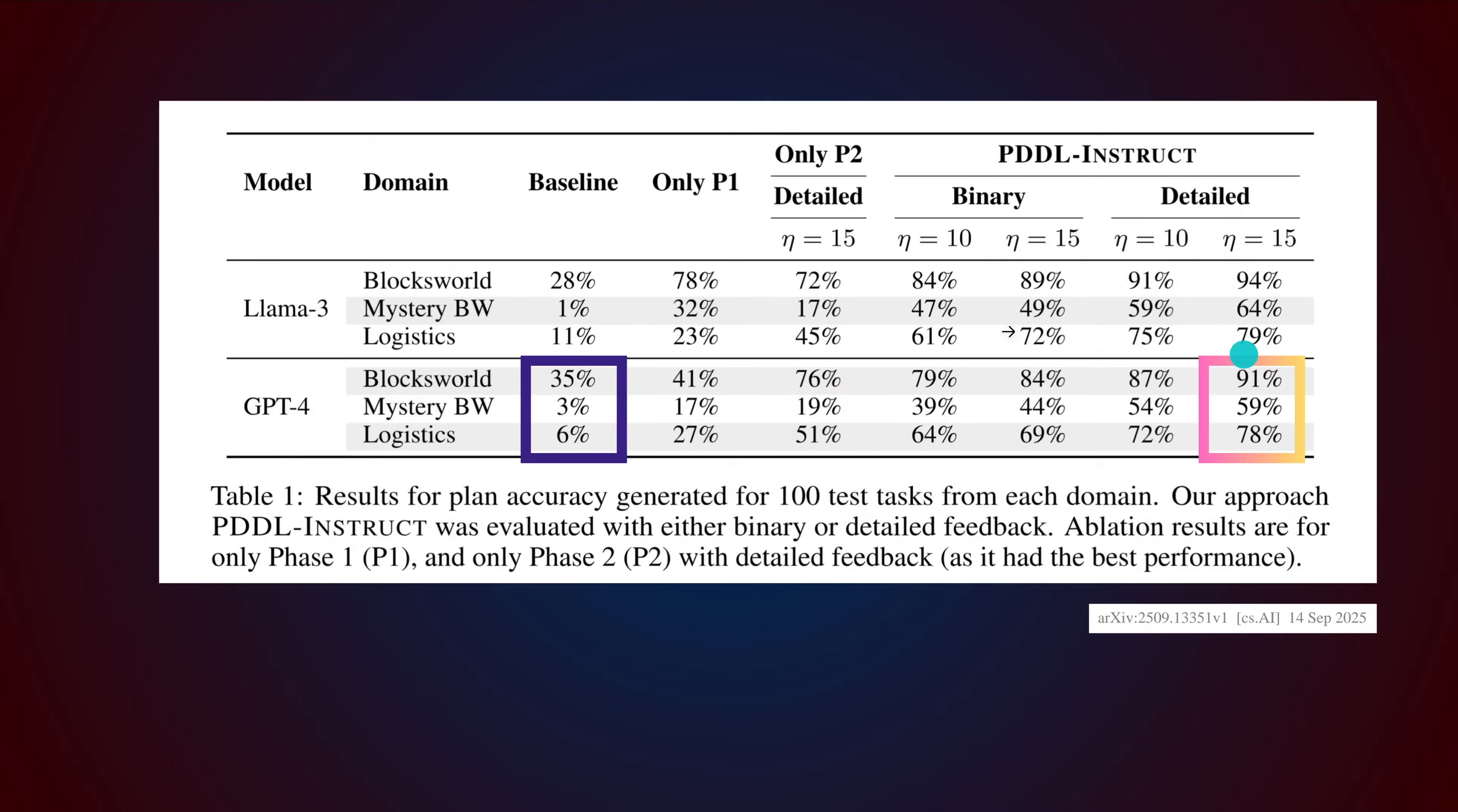Looking at the baseline, we have Llama 3 and GPT-4. With this new methodology, we can go from 35% to 91%, from 3% to almost 60%, and from 6% to 78%. This is really nice. We just have 15 iterations. Very, very nice.